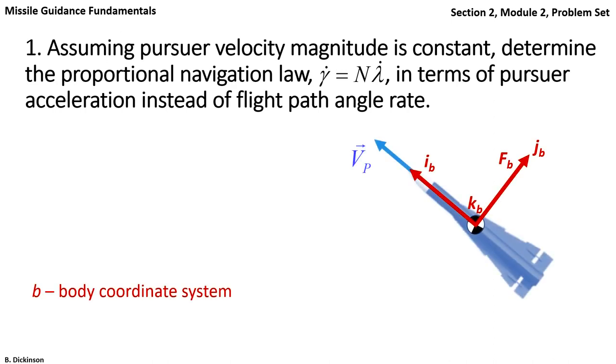Here's a picture of our pursuer with a body fixed coordinate system attached to the center of mass and the i direction aligned out the nose. The velocity vector is also aligned with the i direction.